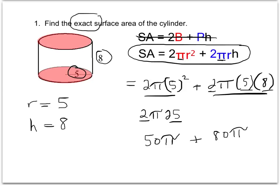Because both terms have π in them, the final answer is 130π. Make sure you label it correctly. It's surface area, and no measurement is given, so label it as units squared. That's the final answer.